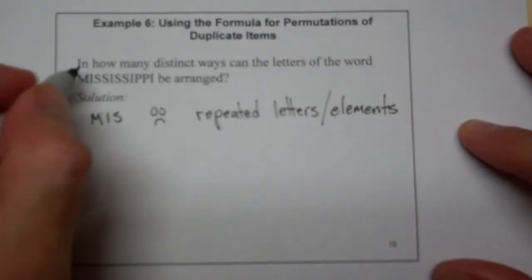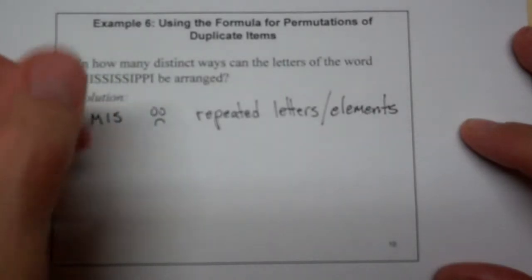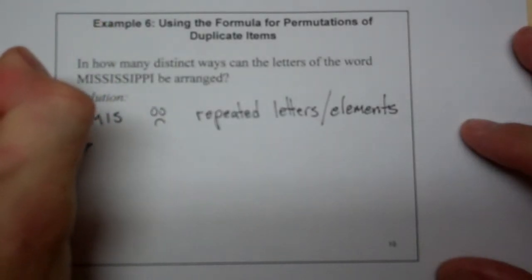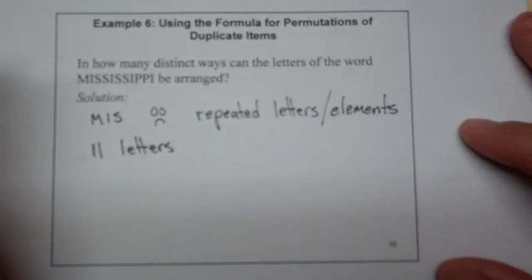So I have one, two, three, four, five, six, seven, eight, nine, ten, eleven letters in Mississippi. So I have eleven letters all together. Alright, so that's what's going to go on the top. My eleven factorial is going to go on the top.